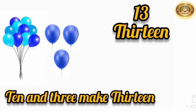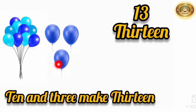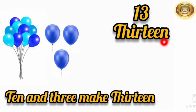The next number which comes after 12 is 13. Here we have 1 ten, and let's count the balloons: 1, 2, 3. We have 3 more balloons. 1 ten and 3 make 13. So the next number is 13. Let's read the spelling of 13: T-H-I-R-T-E-E-N. 13.